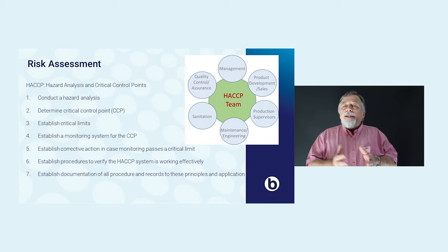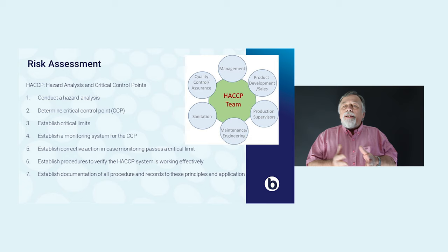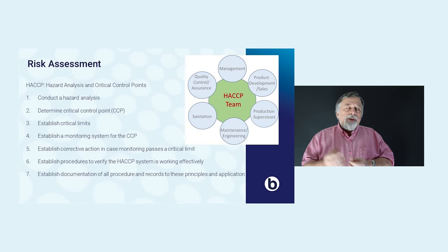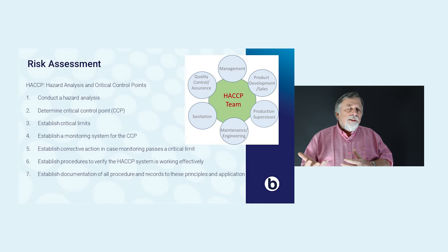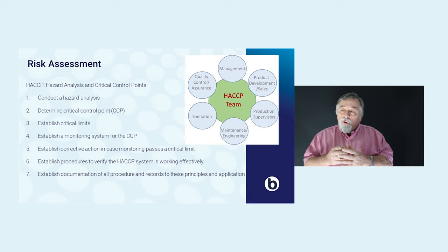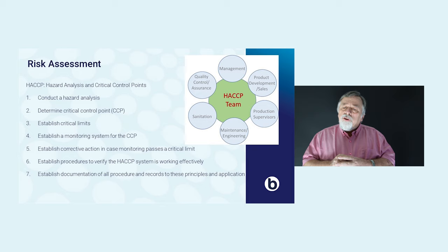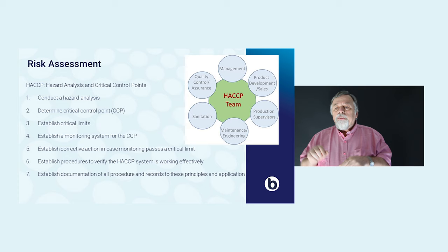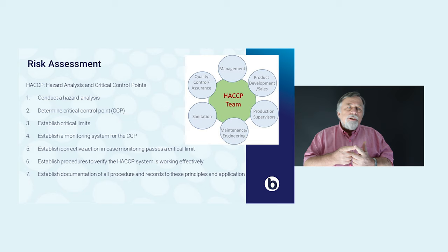Let's first have a look at the HACCP method — Hazard Analysis of Critical Control Points. Again, you put a team together that can include people from management, quality control, sanitation, mechanical engineering, maintenance, production, and so on. You make an analysis of your production process, and in this analysis you determine critical locations. Some experience helps, because it's easier to pinpoint those locations. At these critical locations, you set limits for air cleanliness, surface cleanliness, and particle deposition rate.